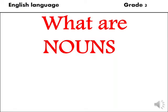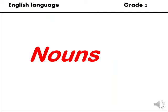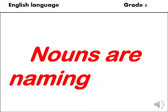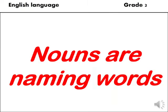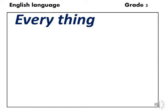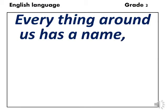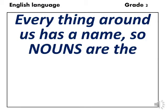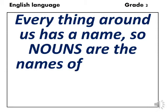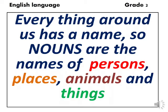What are nouns? Nouns are naming words. Everything around us has a name. Nouns are the names of persons, places, animals and things.